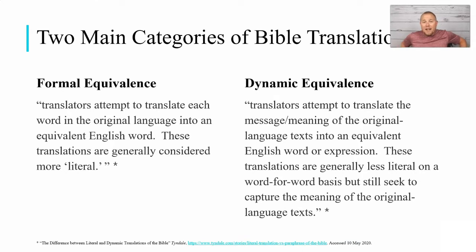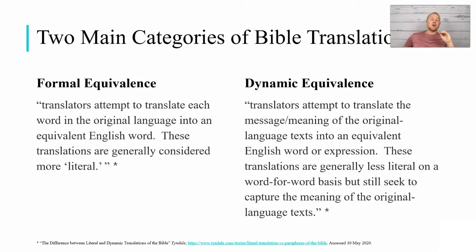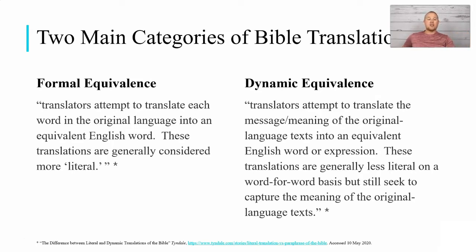There are two main categories of Bible translations: formal equivalence and dynamic equivalence. Let's start with formal equivalence. This is when the translators attempt to translate each word of the original language into an equivalent English word. These translations are generally considered more literal.